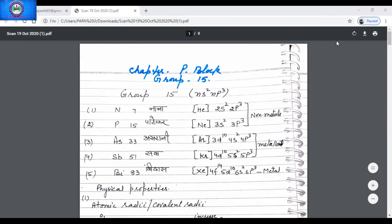You can see that nitrogen and phosphorus are non-metals. Arsenic and antimony are metalloids, whereas bismuth is a metal.